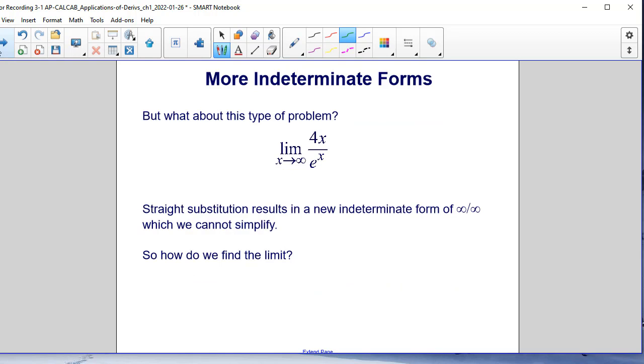But what if we had something like this? The limit as x approaches infinity, 4x divided by e to the x. This is going to result in an indeterminate form of infinity over infinity.